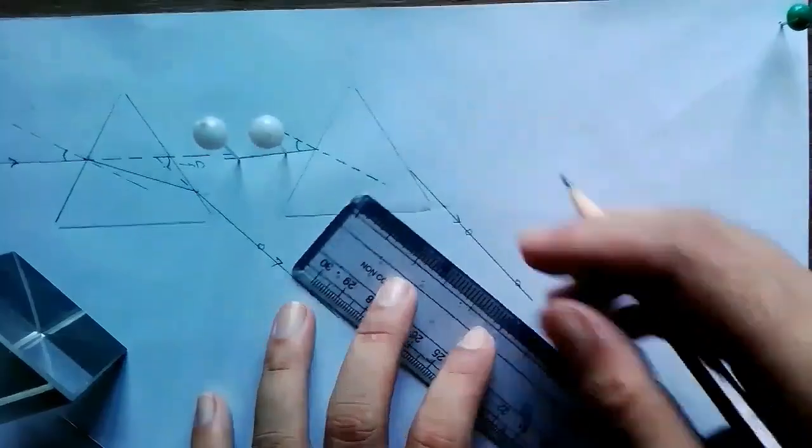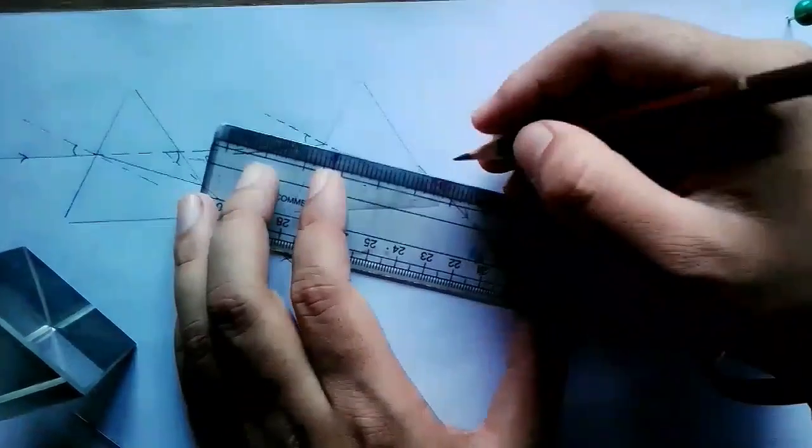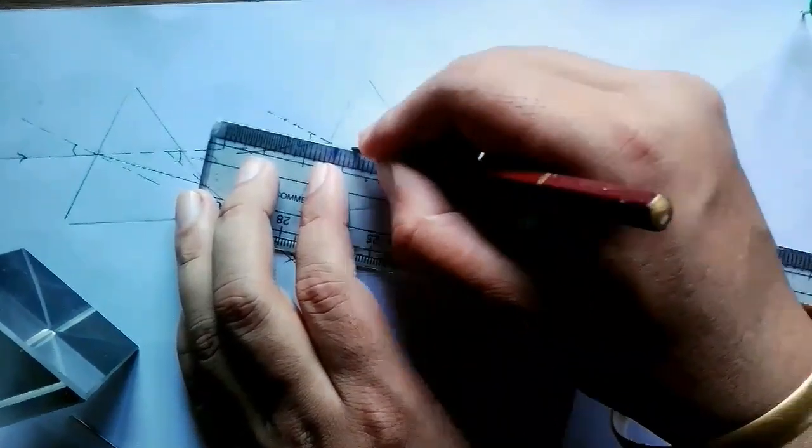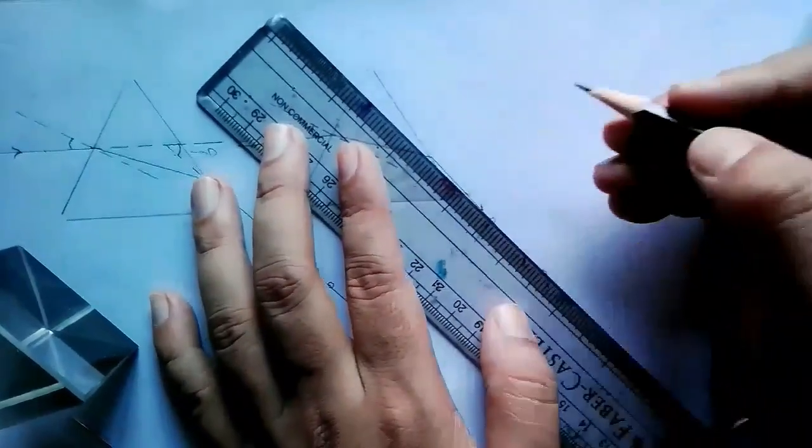Join the incident ray and the emergent ray, and this line is the reflected ray.